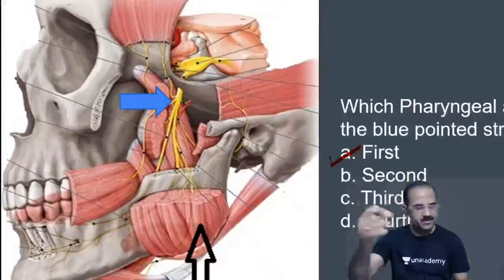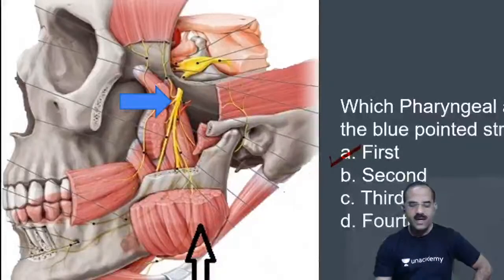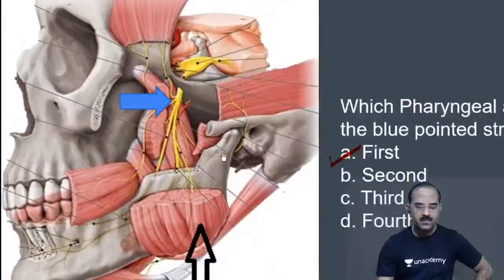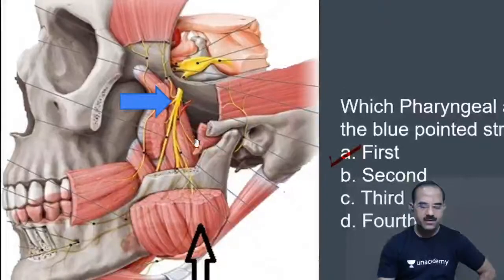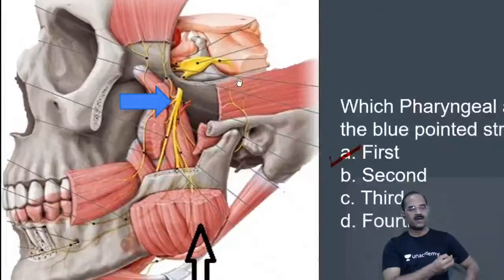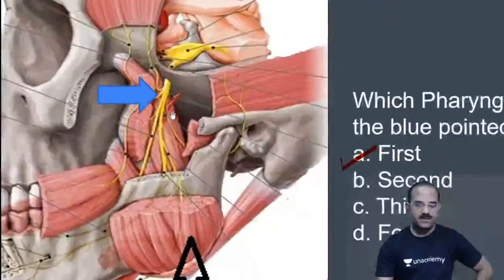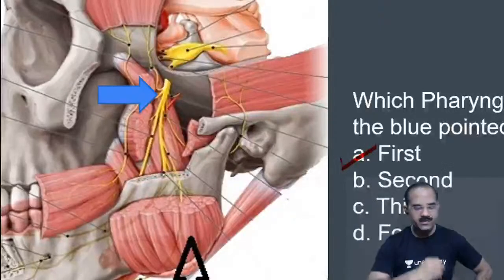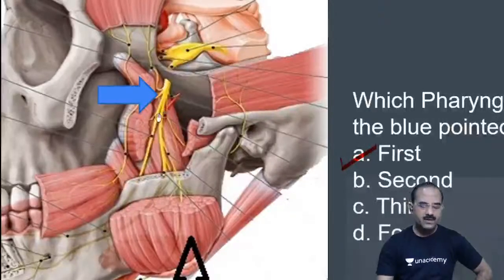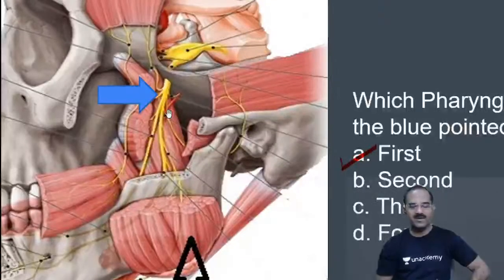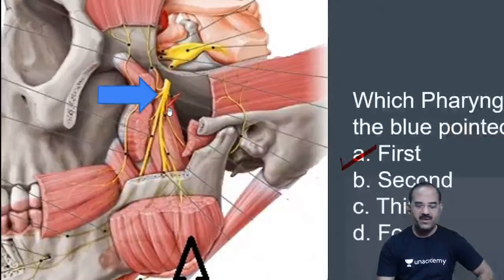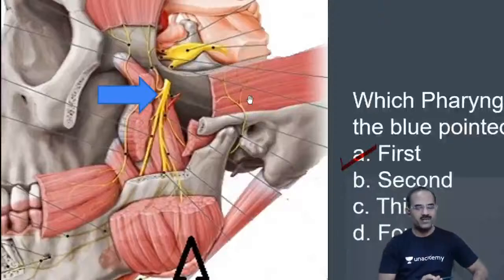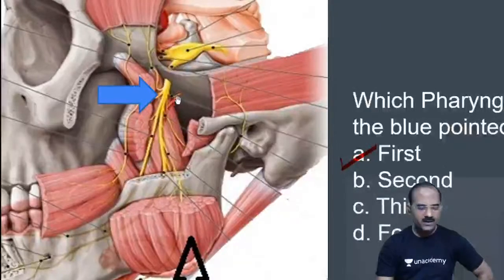The nerve which pierces the buccinator and comes out is the buccal nerve — a branch of the anterior division of the trigeminal nerve. The nerve related to the TM joint is a branch of the posterior division of mandibular nerve. Note: posterior auricular is a branch of the facial nerve, not the mandibular.